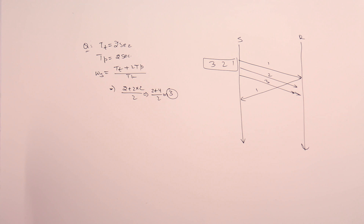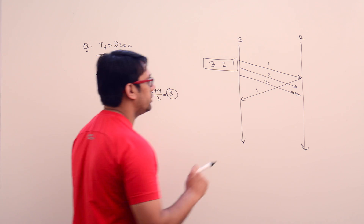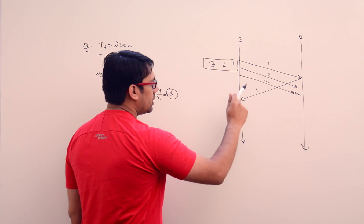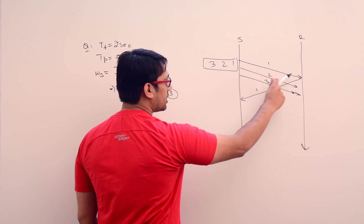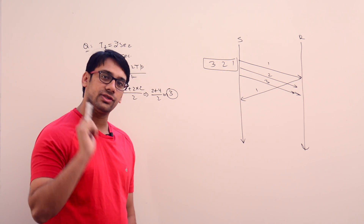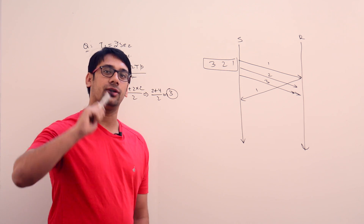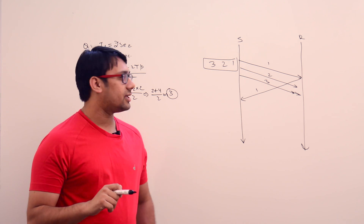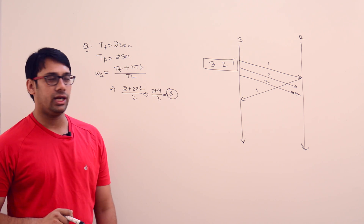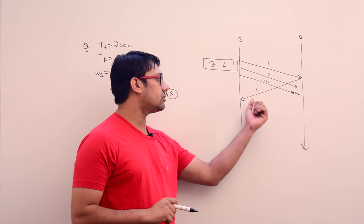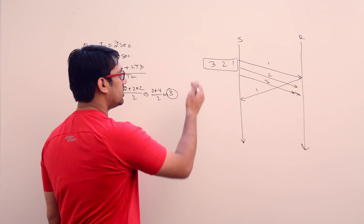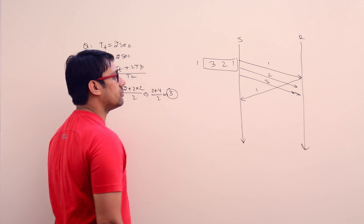Understand one thing: if you send packet number 1, the receiver has already received packet number 1. The receiver says 'I received packet number 1, now send me packet number 2.' As soon as the receiver gets packet number 2, it will say 'now send packet number 3.' After this communication, you know the first packet was already delivered, so you can send the next packet with the same sequence number, which is 1.